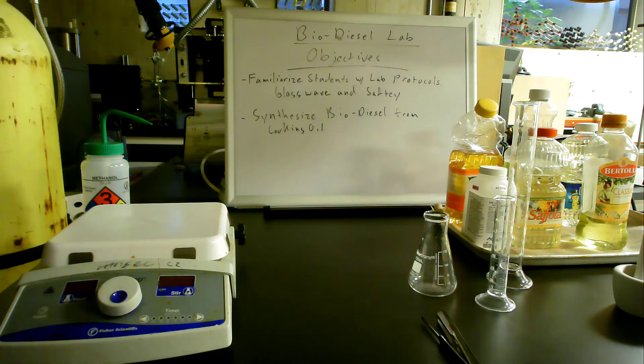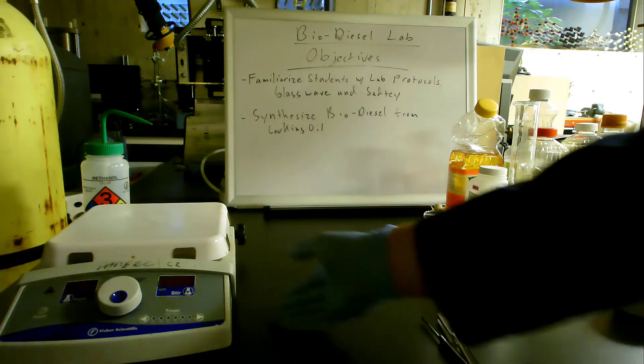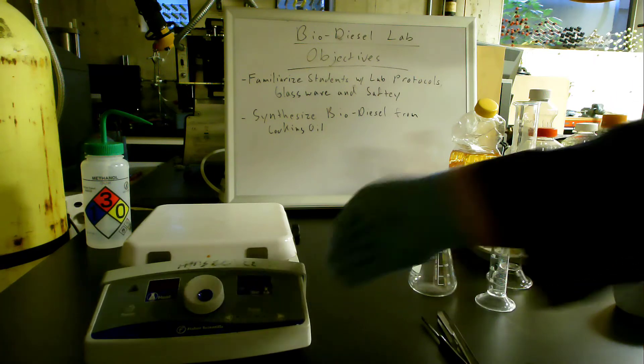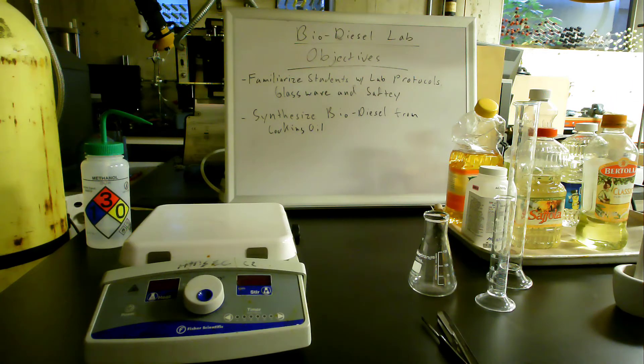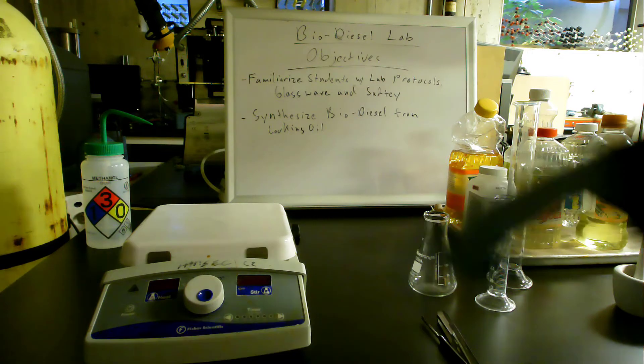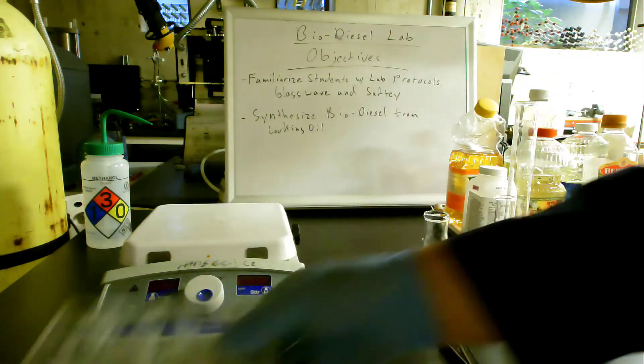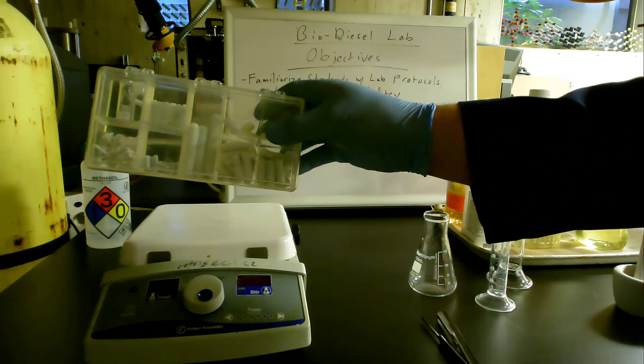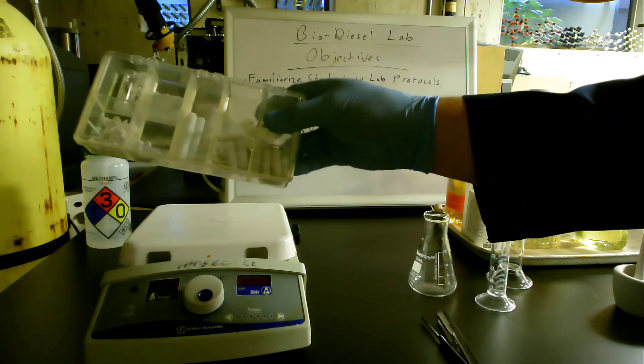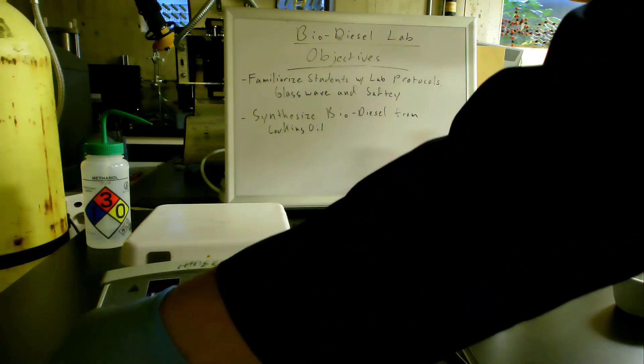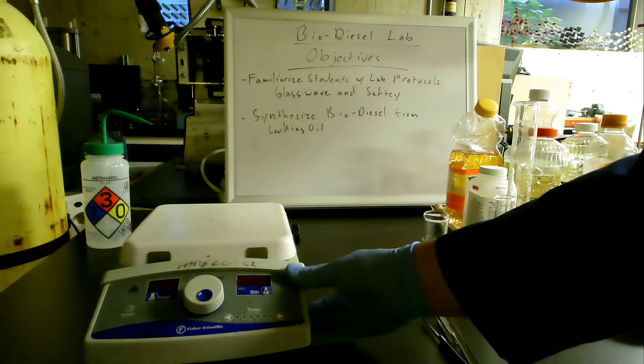Let's take a look at some of our materials. Here we have a stirring hot plate which is named so because it heats stuff up and it can also stir. It stirs using a magnet that's inside underneath the heating element. There's all different sizes of magnets. We call them stir bars and they're teflon coated magnets that you can immerse in your solution and use to stir it.